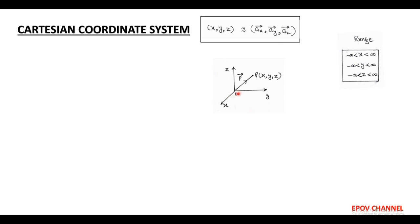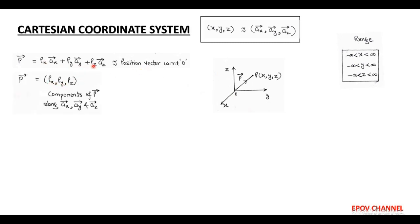To represent coordinates of the Cartesian system, we assume point P having coordinates (x, y, z). With respect to the origin, we draw a position vector and denote it by capital P vector. So, P vector equals Px unit vector x plus Py unit vector y plus Pz unit vector z. This is called the position vector with respect to the origin. Here, Px, Py, and Pz are called the components of vector P along unit vector x, unit vector y, and unit vector z. In case of position vector, the components of P are the same as the coordinates, that is x, y, and z.